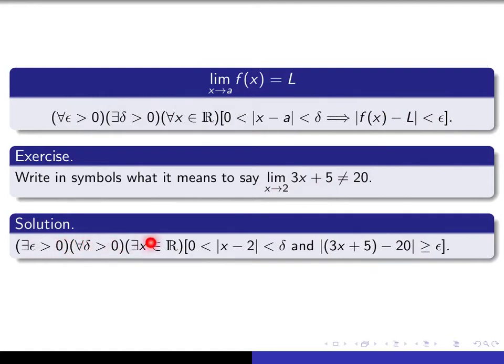This statement precisely captures the intuitive idea that there exists some special number epsilon so that no matter how small a delta we pick, you can always find some number x that's within a distance of delta of the number 2, with the property that your f of x is farther away than epsilon from the number 20. So you're never really able to force f of x to be within epsilon units of l whenever x gets sufficiently close to the number a.